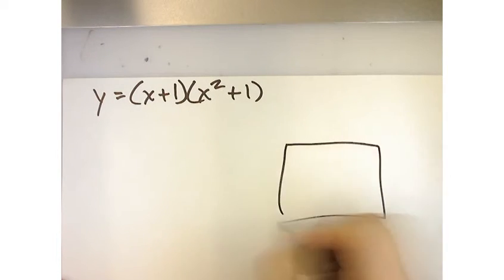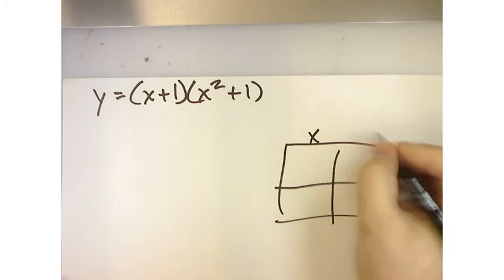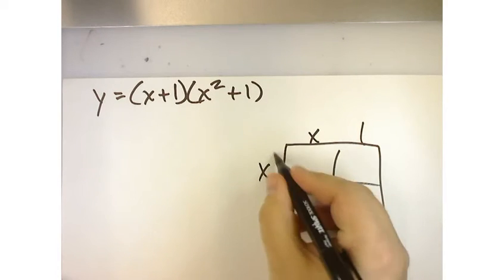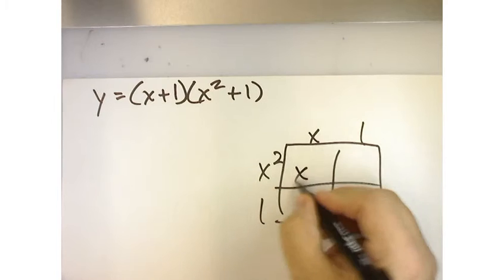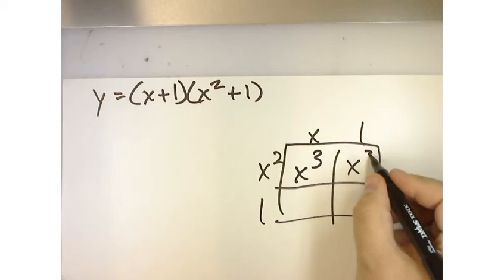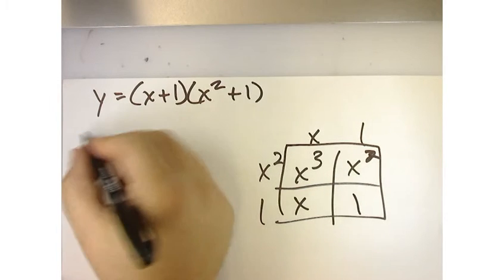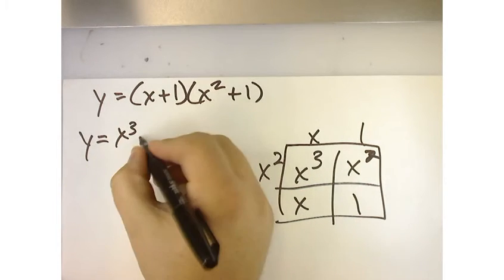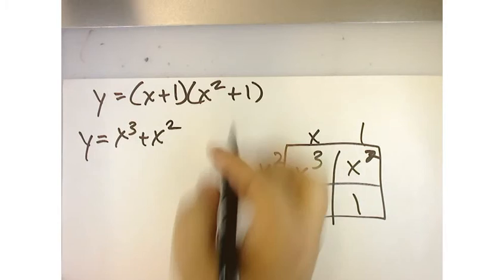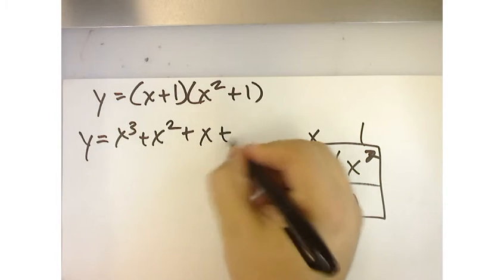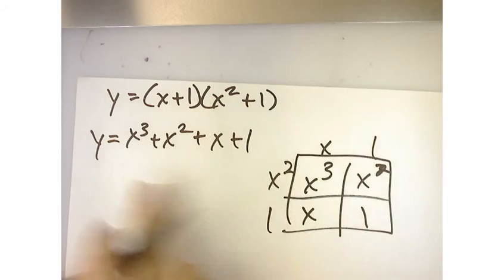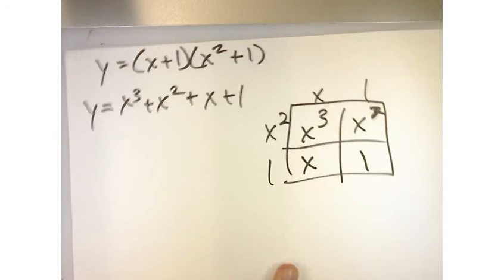Now what they want us to do is start over with the function and expand the binomials. In other words, before we take y prime, let's multiply this out and see what we get. Let's take x plus 1 times the quantity x squared plus 1. And I get x cubed, x squared, x and 1. In other words, this is y equals x cubed plus x squared plus x plus 1. So if I multiply that out, this is the polynomial I'll get. Does that make sense?